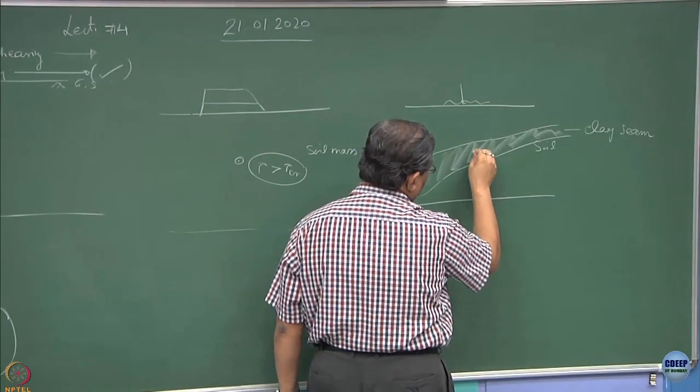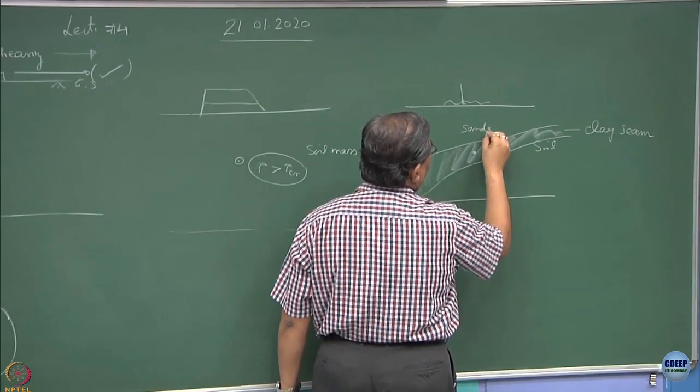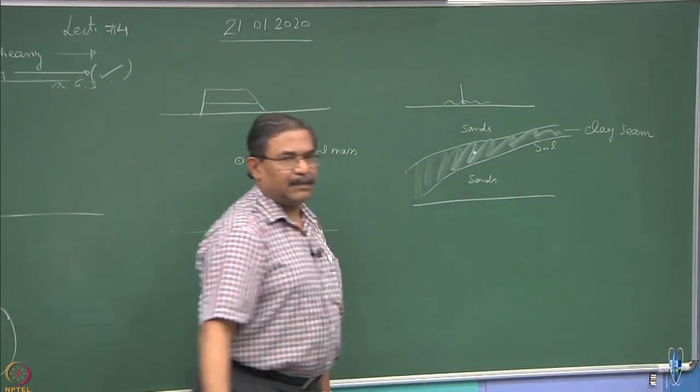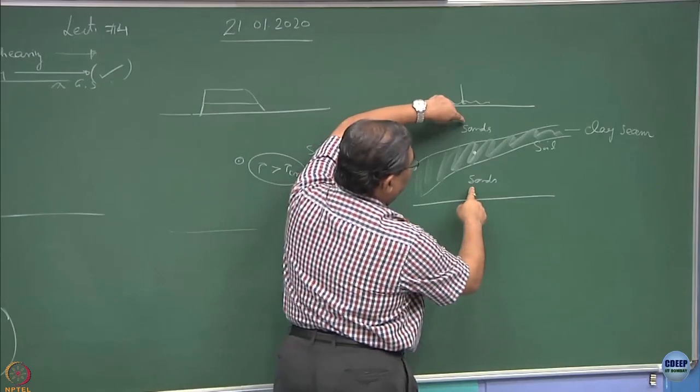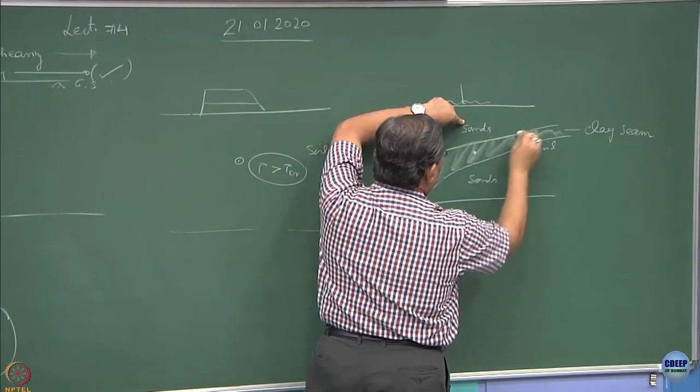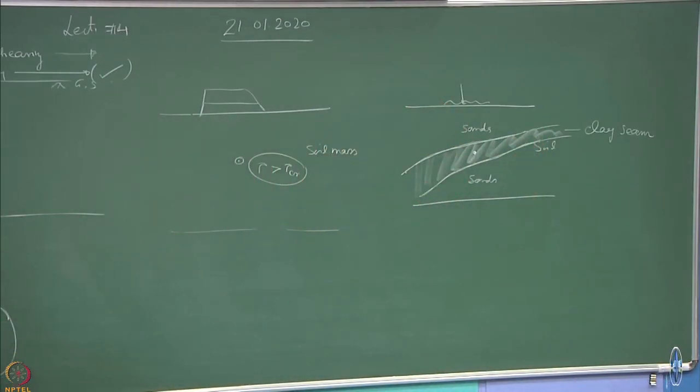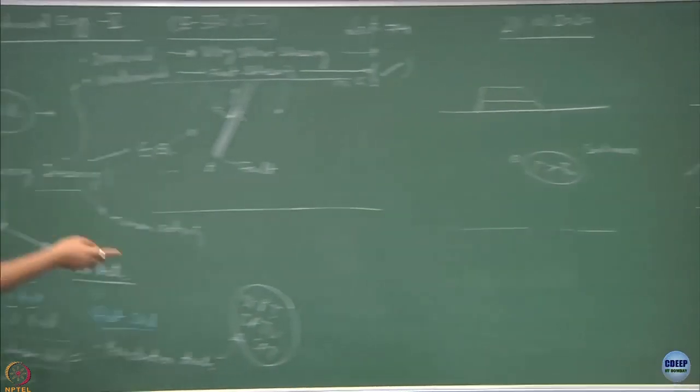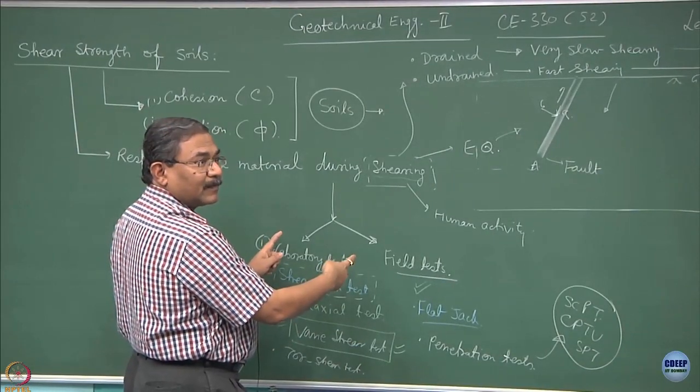Now there could be a situation that this is sands and this is also sands. That means clay seam is sandwiched between the layer of sands. So the moment you start loading it, this being permeable system, what we called is that this is a double drainage system, drainage is taking place from both the ends. So what I have to do is, if I want to simulate a drained condition, I have to simulate the similar situation in my testing over here.